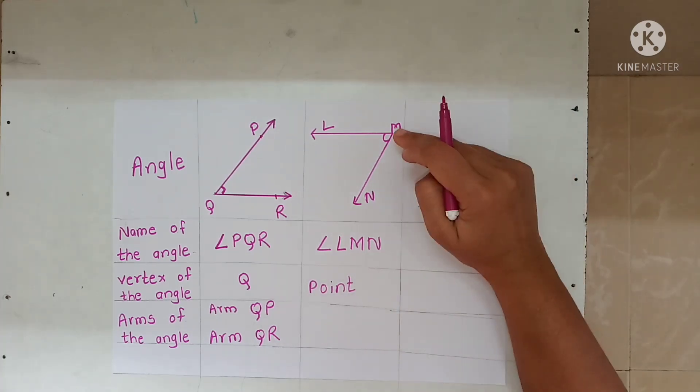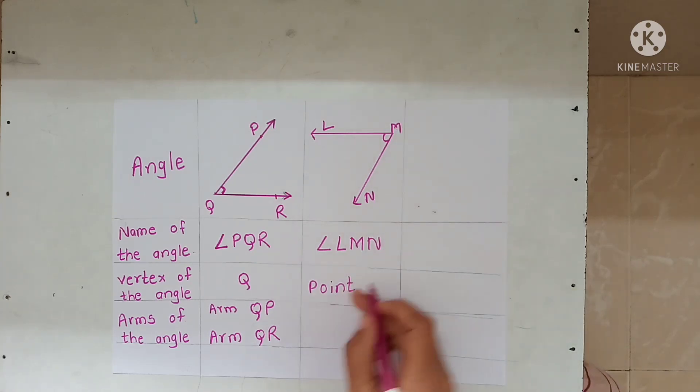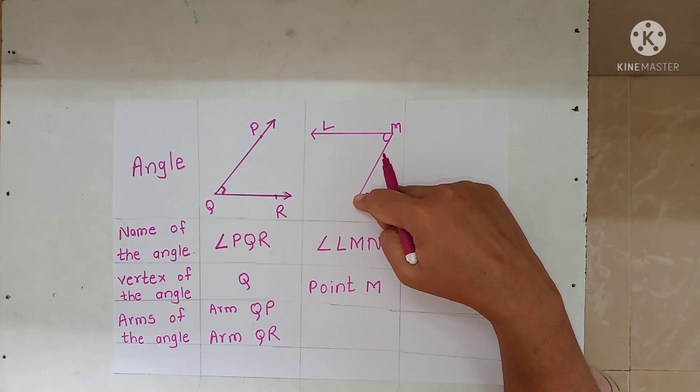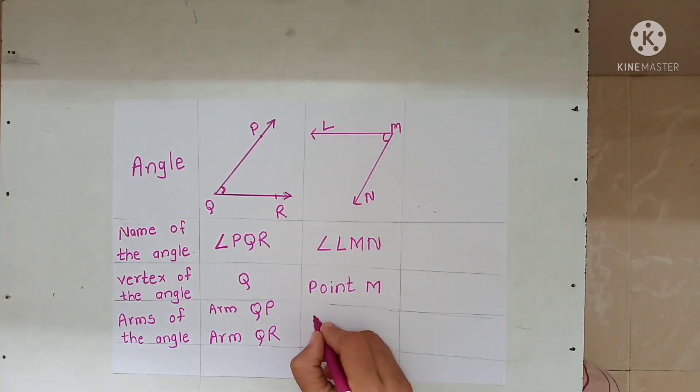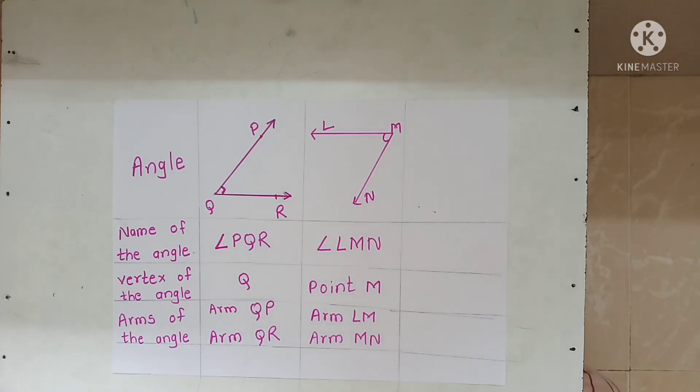The vertex of the angle is point M. Point M is where the angle is formed. So point M is the vertex. Then the arms: arm LM and arm NM. These two arms form the angle.